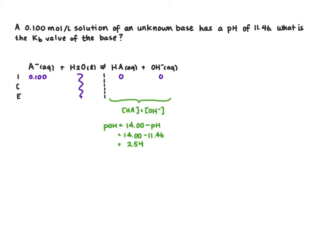From pOH, we can find hydroxide using the formula 10 to the minus pOH. So 10 to the minus 2.54, and we get 2.88, so 2.9 times 10 to the negative 3.